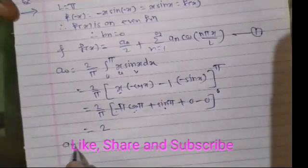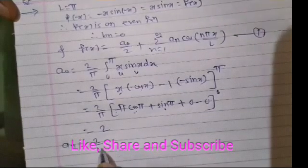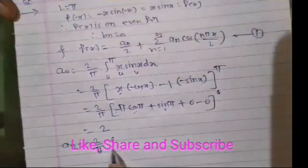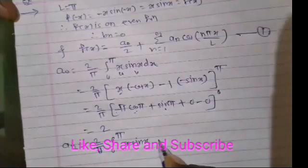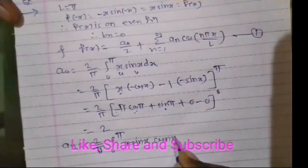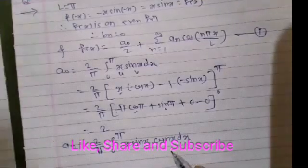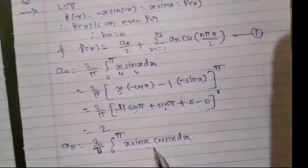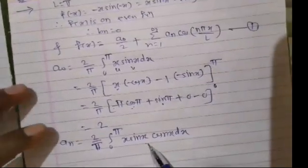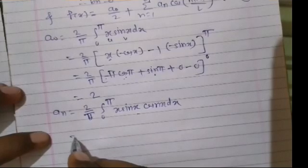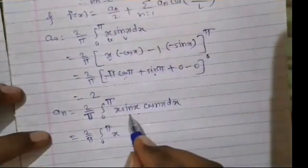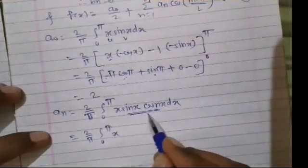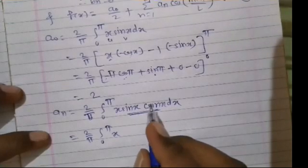After a0 we have to find an. The formula for an is an = (2/l)·∫₀ˡ f(x)·cos(nπx/l) dx. With l = π, this becomes an = (2/π)·∫₀^π x·sin(x)·cos(nx) dx. Since we have a product of three functions x, sin(x), and cos(nx), we apply a trigonometric product formula before integrating.